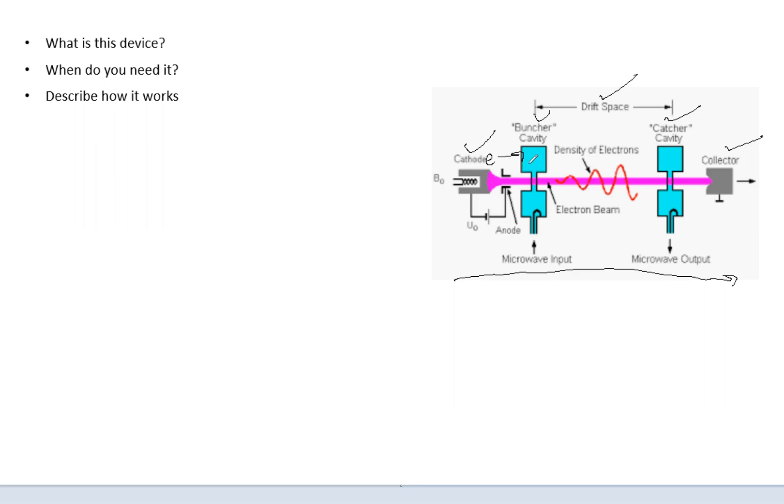So now the bunter cavities. These are energized by low power microwaves. And what this does is set up alternating electric fields across the gap right here between these gaps. Now, the electric field varies in time, and only the negative electric field accelerates.